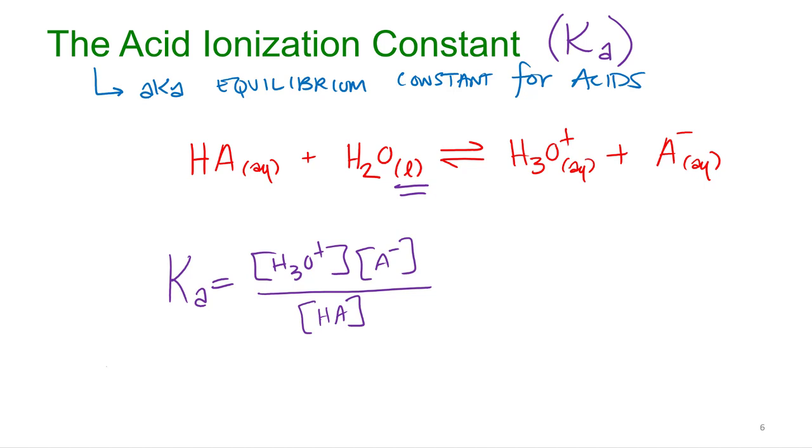Now let's think about what this could tell us about the strength of the acid. So if you're looking at a weak acid, and we say it's a pretty strong weak acid versus a pretty weak weak acid, what do you think that means? The stronger the acid, do you think we're making more hydronium or less hydronium?